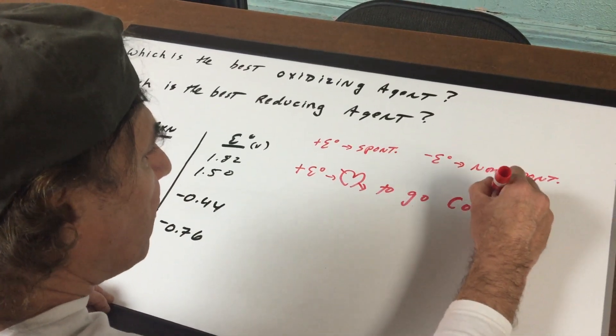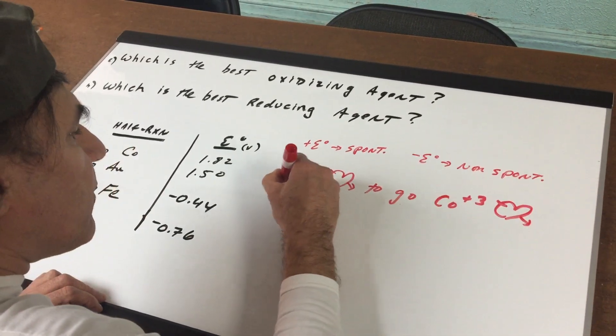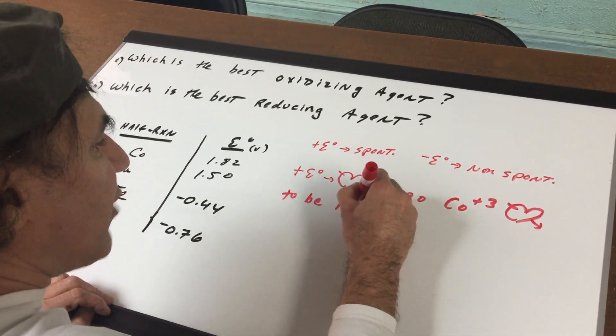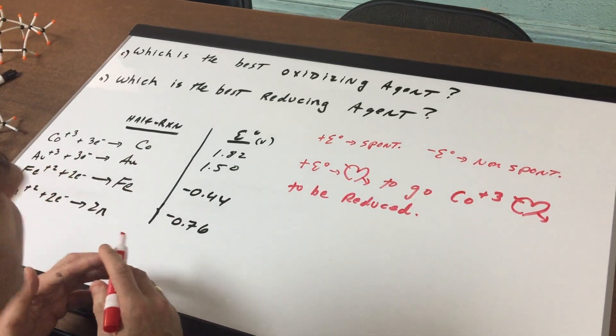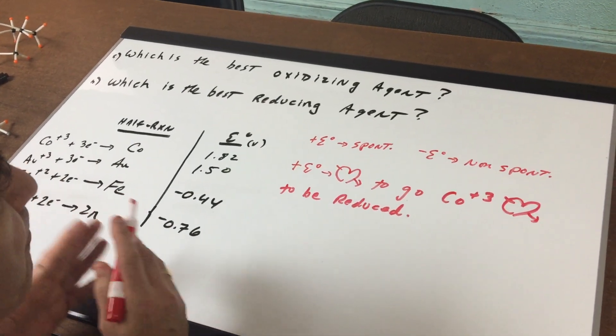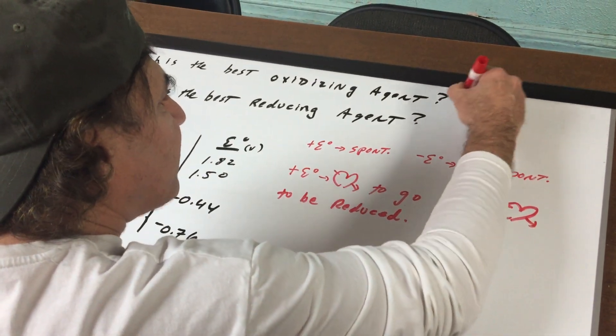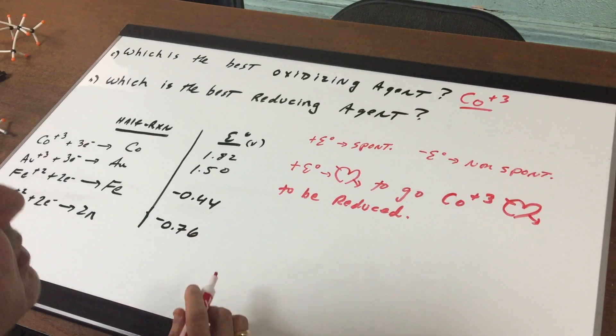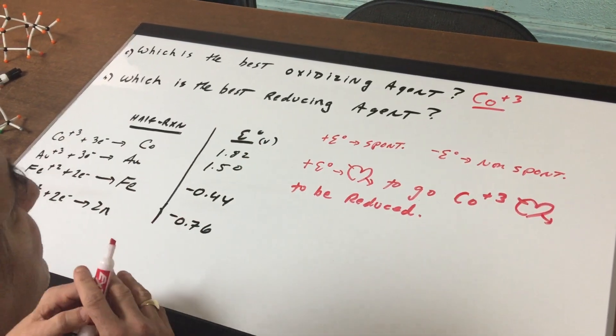So that would mean that cobalt plus 3 loves to be reduced, and if it loves to be reduced it would make cobalt plus 3 the best oxidizing agent. So that is a slam dunk if they ever ask you what's the best oxidizing agent. It's the one with the most positive E0.